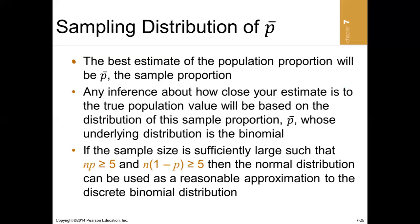In a question where you are not given a population proportion and you are asked to do computations, the best estimate of a population proportion that you can have is the sample proportion. However, it can be a best estimate if and only if the sample size is large, because with a large sample size the sampling distribution will be normally distributed.